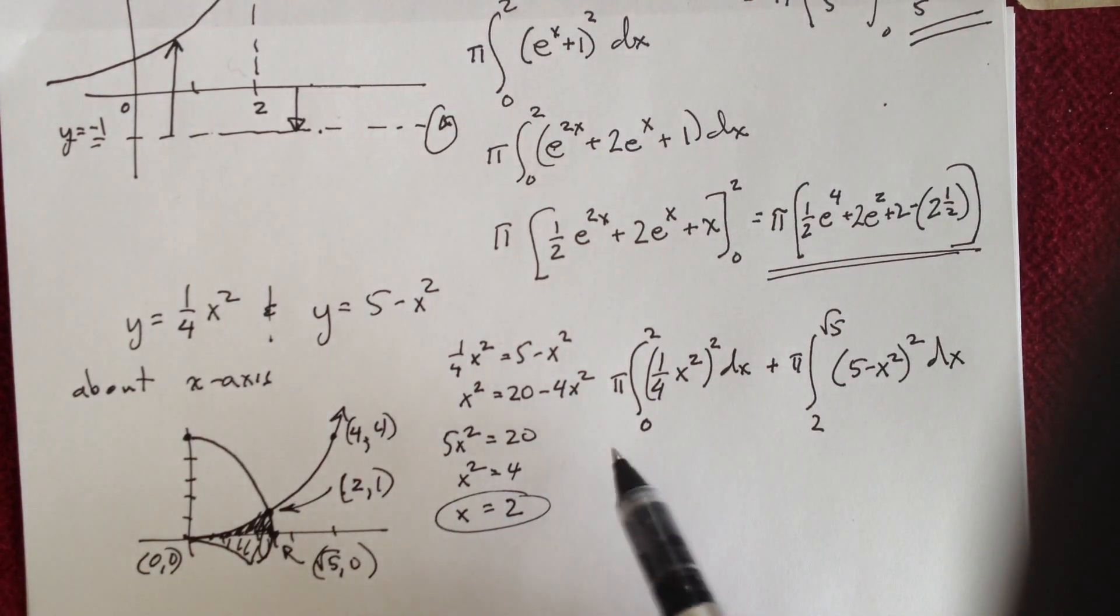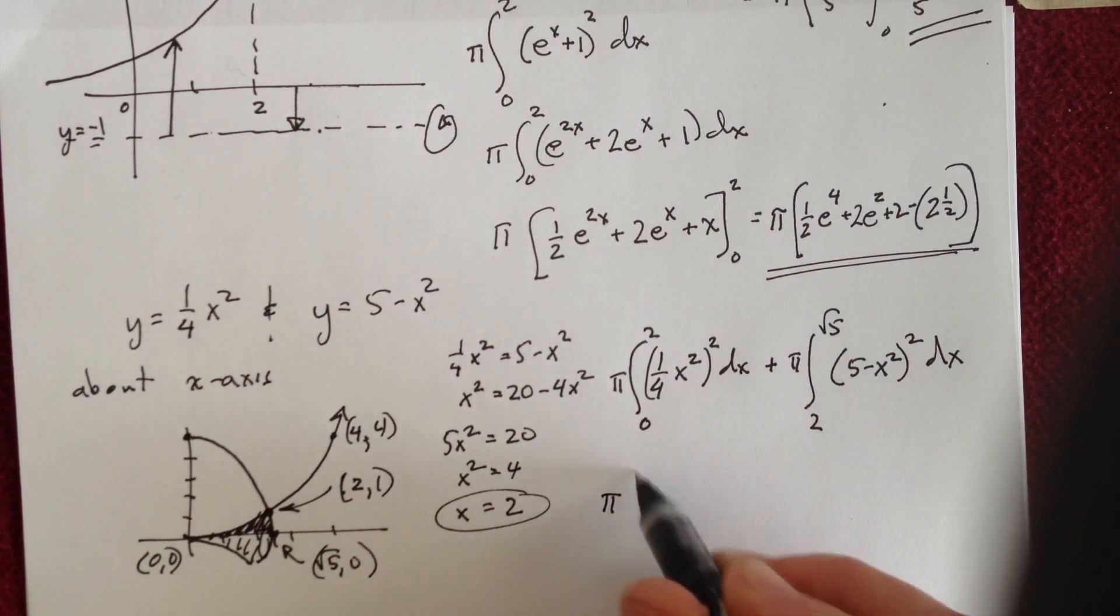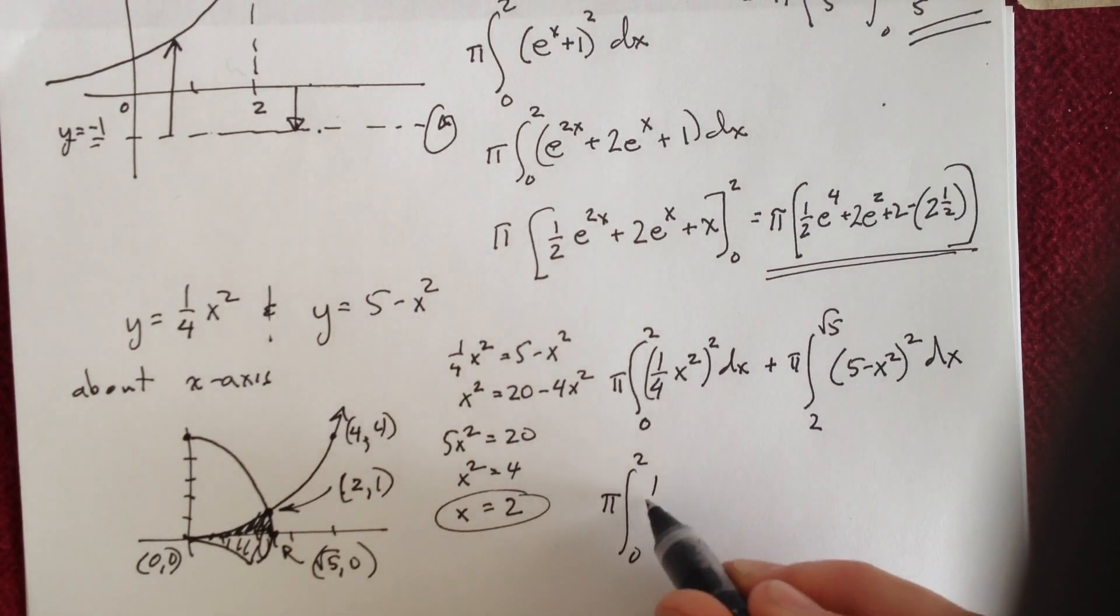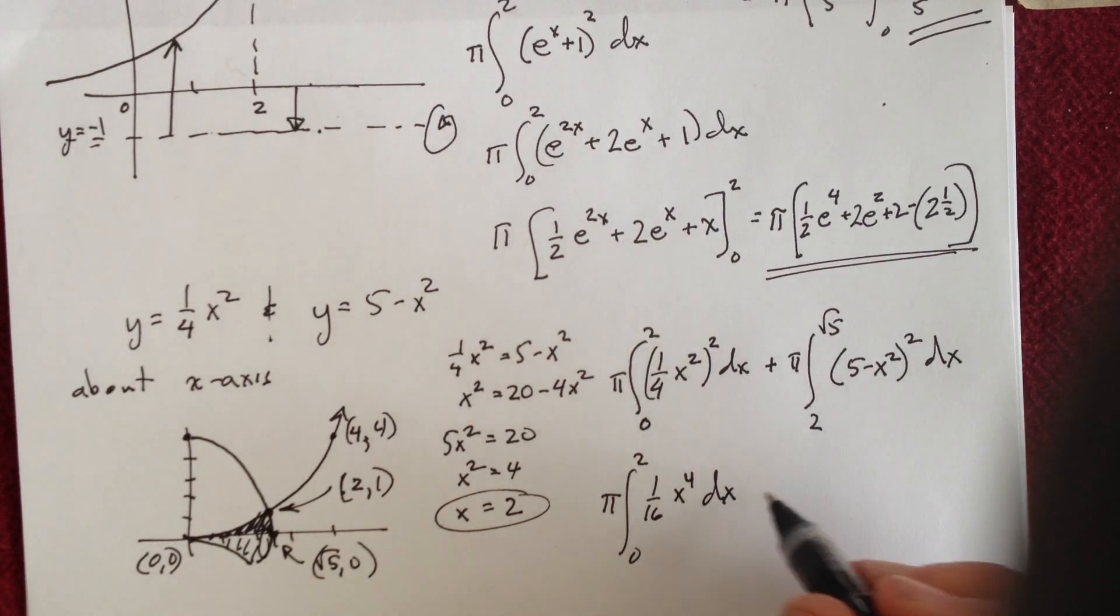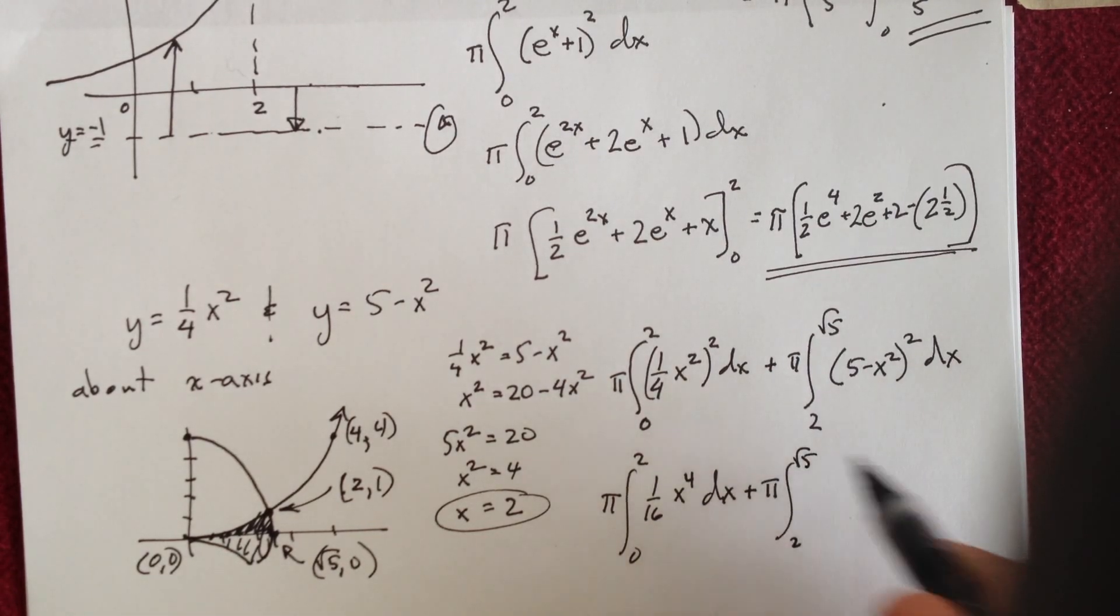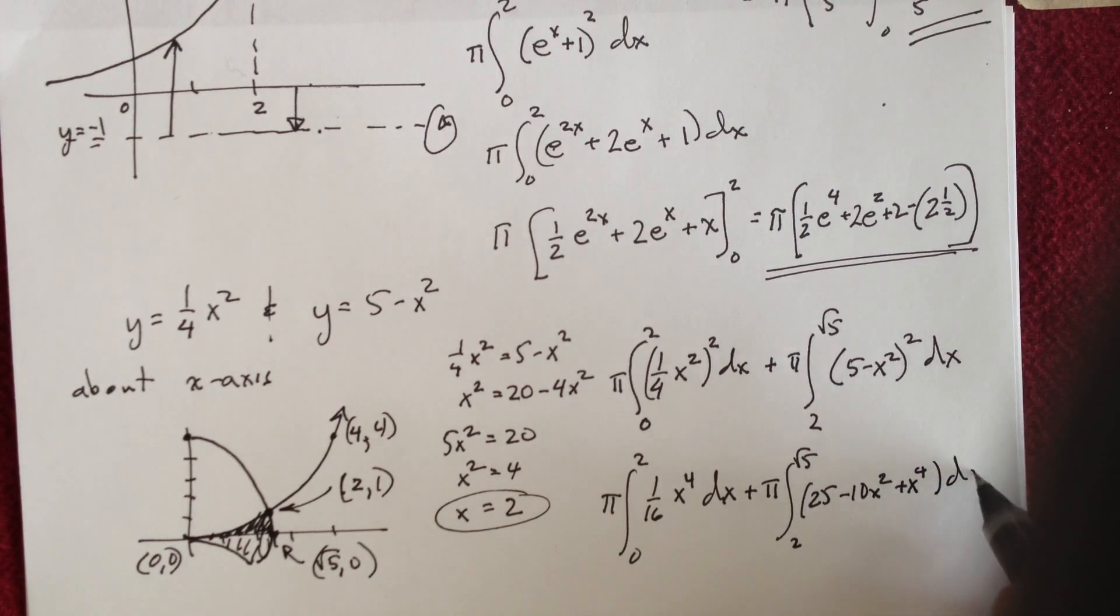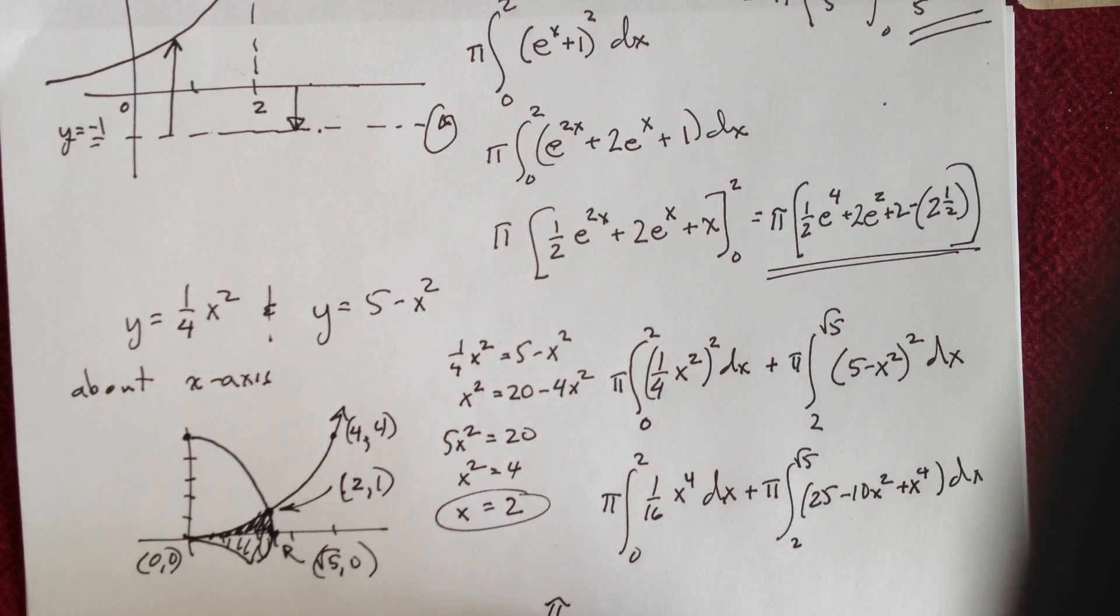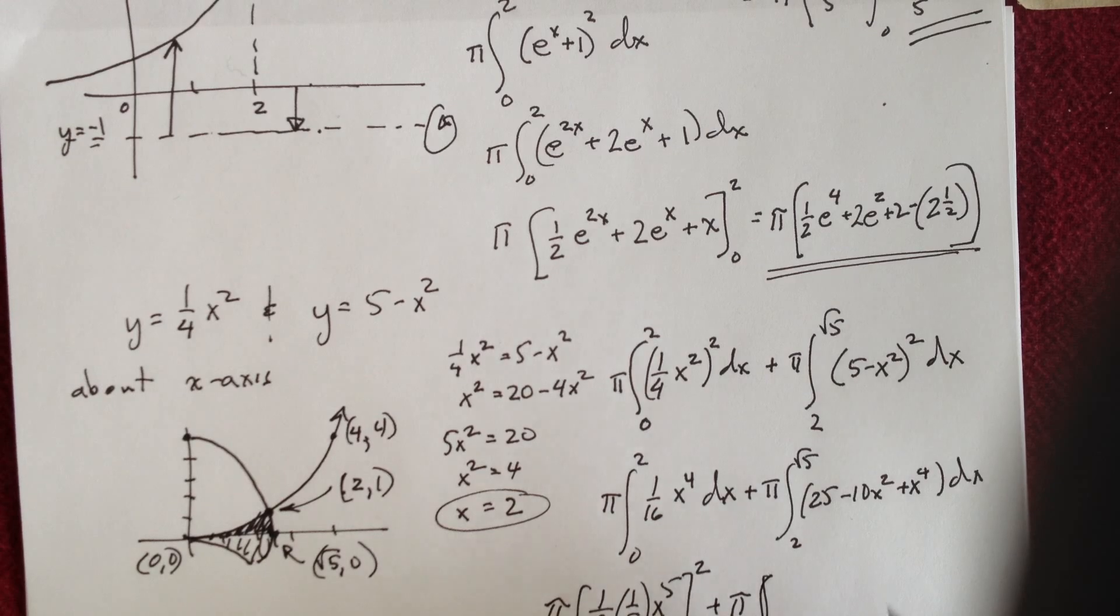Keeping an eye on the time here, I'm at 10 minutes or so, I'll just quickly get this set up. This first one will be pi times 0 to 2, and if I square that, I get 1 sixteenth x to the 4th, and when I foil this out, it's pi, and it's from 2 to radical 5, that's going to be 25 minus 10x squared plus x to the 4th dx, and then integrating is going to bring that pi, and it's going to be 1 over 16, 16 times 1 fifth x to the 5th, and that's evaluated from 0 to 2, plus then this is pi, and this is going to be 25x minus 10 over 3x to the 3rd plus 1 fifth x to the 5th, evaluated from 2 to radical 5.